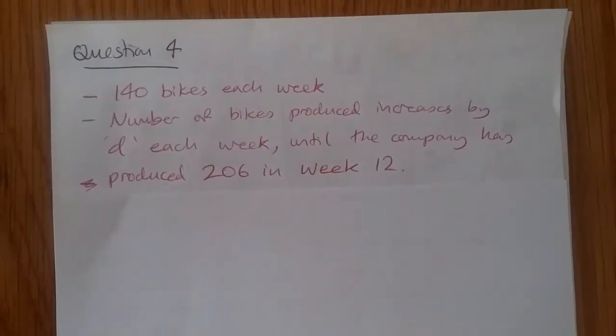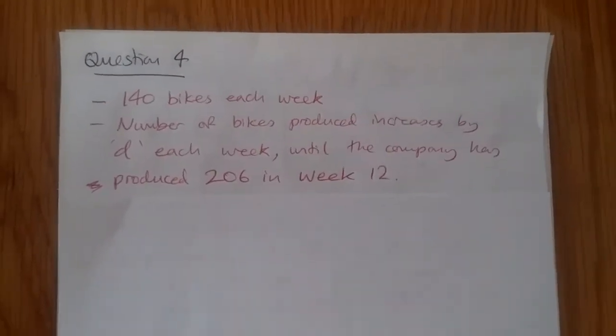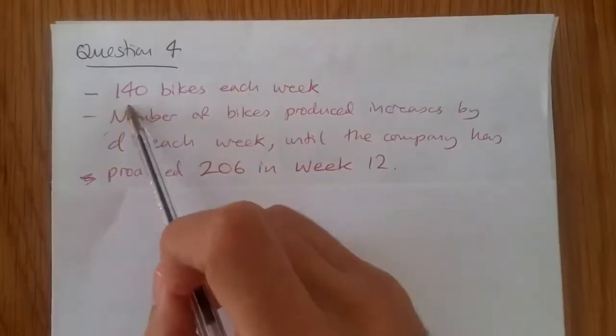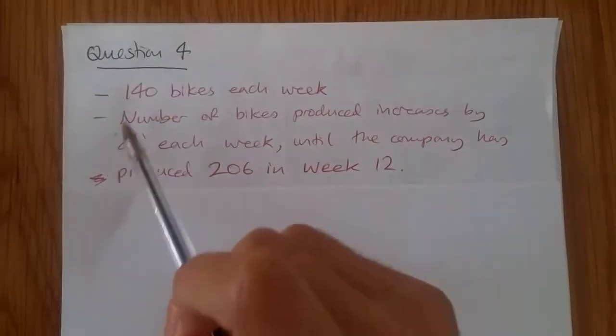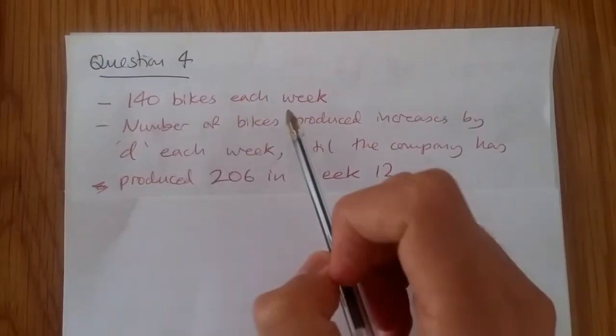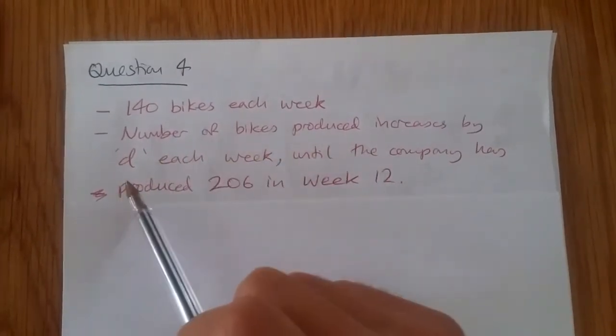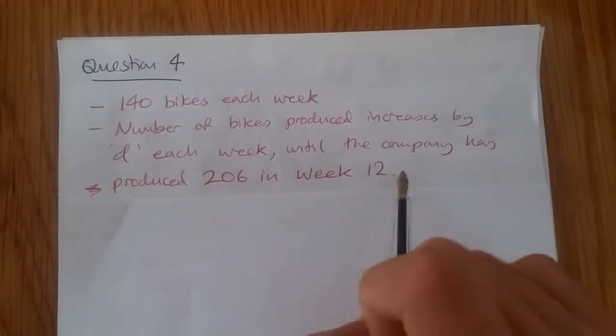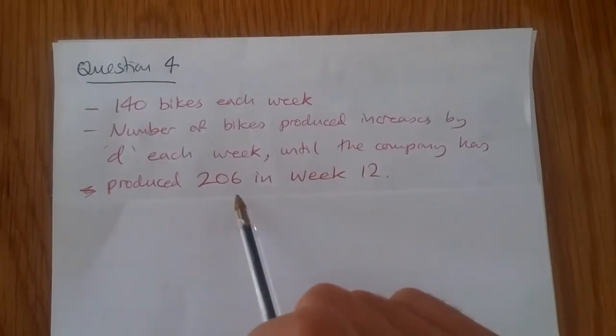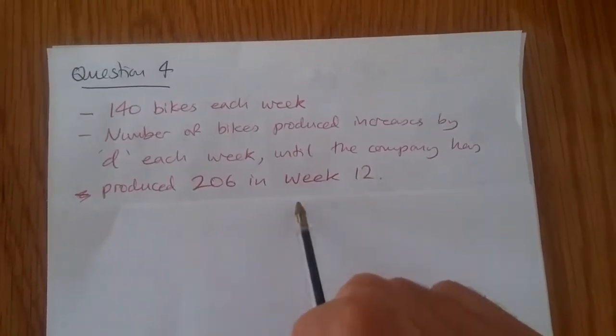It's question 4. According to the exam paper May 2017 C1, we know there are 100 companies producing 140 bikes each week. We know that the number of bikes produced increases by D each week until the company has produced 206 bikes in the 12th week.